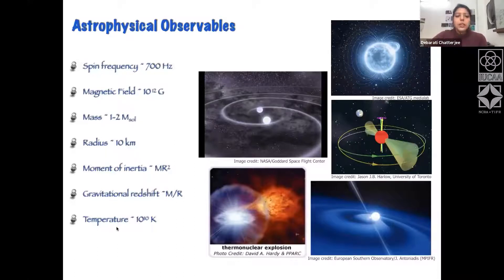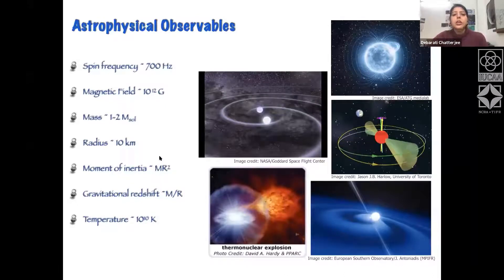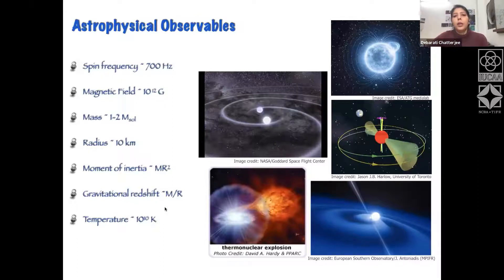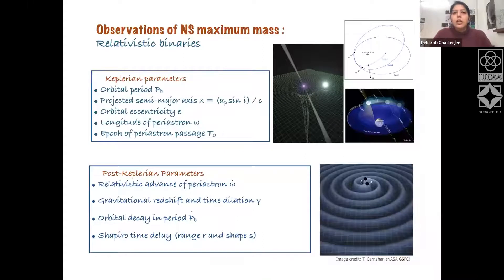Other observables include the moment of inertia, which is the product of mass and the square of the radius. If we know the mass and moment of inertia, we can determine the radius. Similarly, gravitational redshift is proportional to mass divided by radius, so any complementary measurements of mass, radius, and redshift can constrain the others. Neutron star observations help us determine the maximum mass, and relativistic binaries allow very accurate mass measurements.